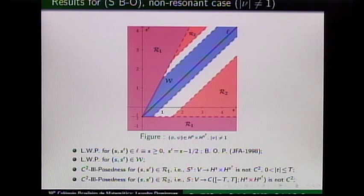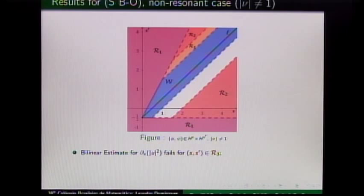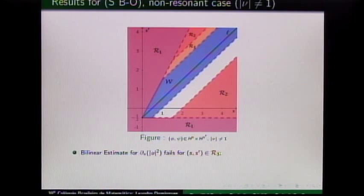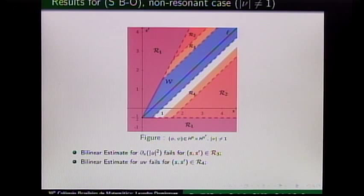There are remaining regions. The key point to obtain local well-posedness is to obtain estimates for the nonlinearity, and we prove in one region that one of these estimates fails. So it is not a matter of refining the counts — with our method it is not possible to obtain local well-posedness in that region. For another nonlinearity the estimate fails too. For the last remaining region, we could prove the same in the particular case when alpha equals zero.